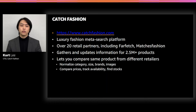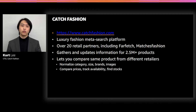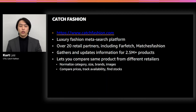In the luxury fashion market, it's quite common to see the same product from different retailers, because there are a handful of brands that make the same products. If a product is popular, every retailer will want to have it. The problem is that each retailer uses their own categories, sizes, brand names, and even images for the same products, so users have a hard time finding the same product across retailers. We aggregate and merge those products so users can compare prices, track availability, and find stock of the product they want to buy.